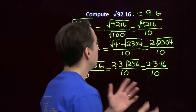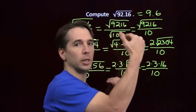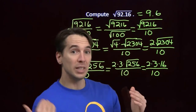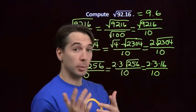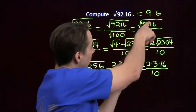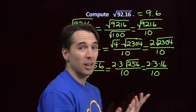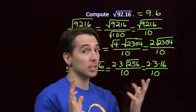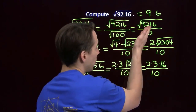We can do a quick check: 92.16 is between 81 and 100, so its square root should be between the square root of 81, which is 9, and the square root of 100, which is 10. And 9.6 sure is. Also, if we multiply 9.6 by itself, we're going to get something that ends in 6 — and 92.16 ends in 6. The quick check doesn't tell us for sure we're right, but we can be pretty confident that we're done.